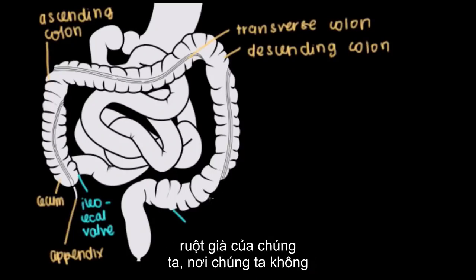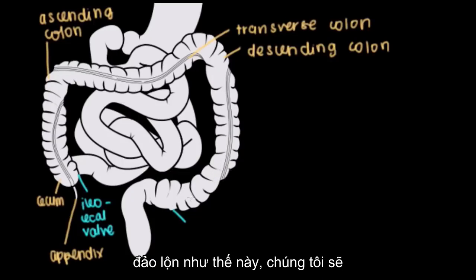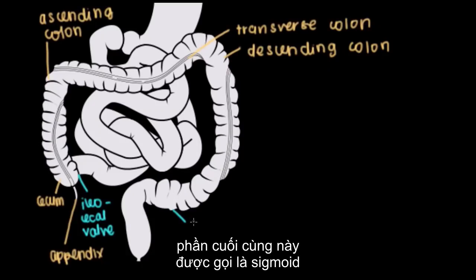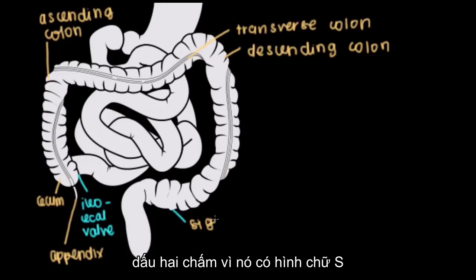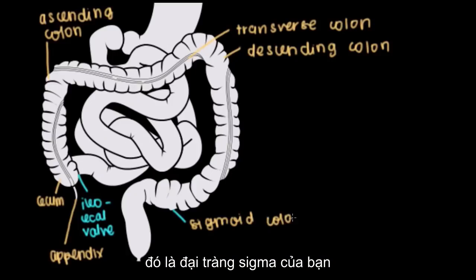The last part of our large intestine is where we're not really descending anymore, but kind of flipping around — going upwards — and you see sort of an S shape sometimes. Because of that S shape, this last part is called the sigmoid colon.